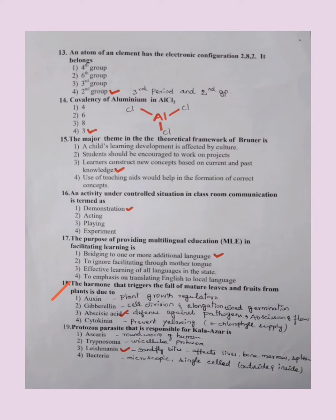The hormone that triggers the fall of mature leaves and fruits from plant is due to. The answer is abscisic acid. This triggers the abscission of the plant. Let's check the other answers also. What is auxin? This hormone helps the plant to grow, it's a plant growth regulator. Then gibberellin, that helps for cell division, elongation, and seed germination also. Cytokinin, it prevents yellowing of the plant, meaning it always supplies the chlorophyll. Cytokinin is important for the green of the plant. It helps to prevent the yellowing of the leaves. So the right answer is abscisic acid.